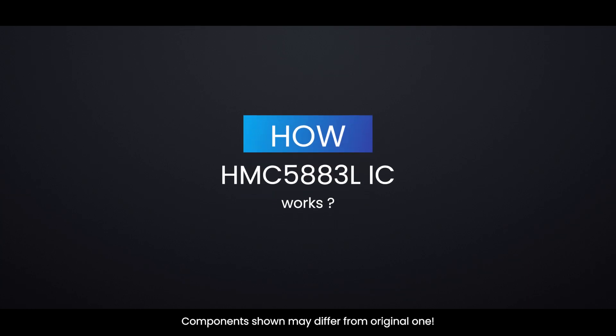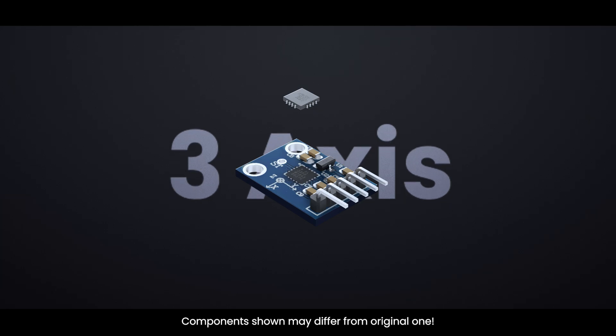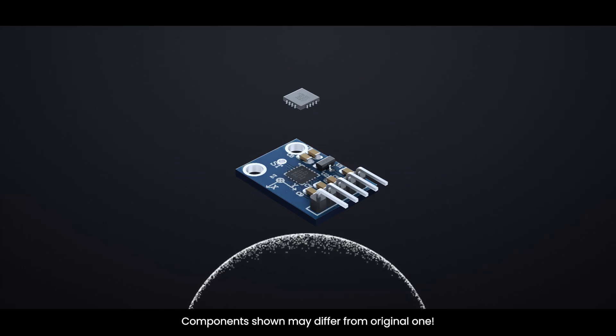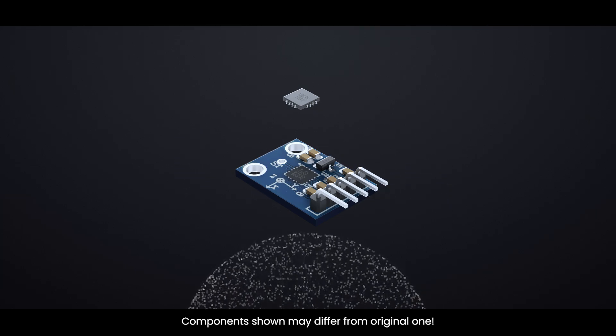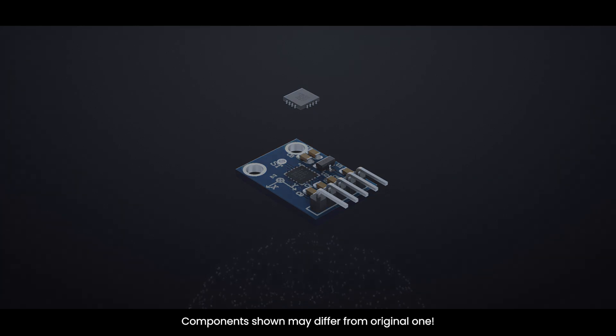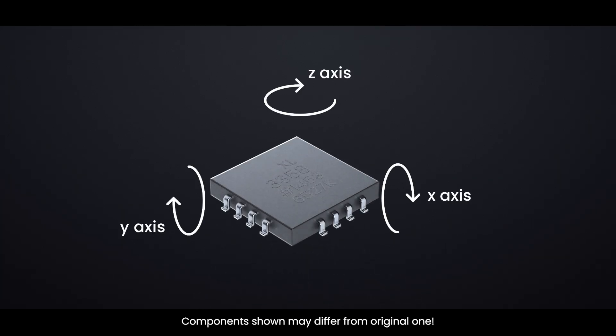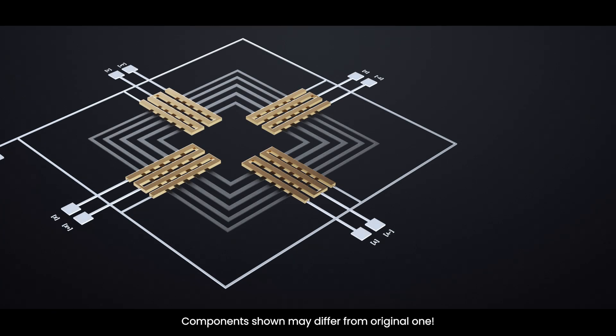Now let's see how this HMC5883L IC works, what's inside it. The HMC5883L is a 3-axis digital magnetometer designed to measure the Earth's magnetic field and determine orientation or heading. Inside the chip, each of the three axes, X, Y, and Z, is equipped with tiny strips of a special metal alloy called permaloy.